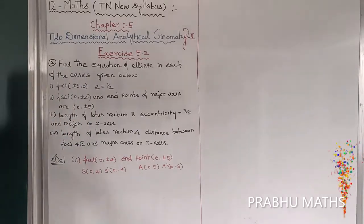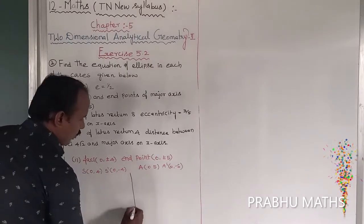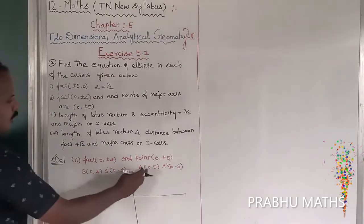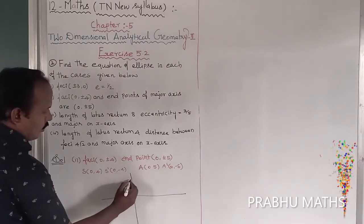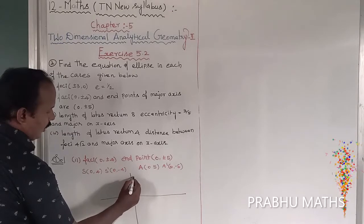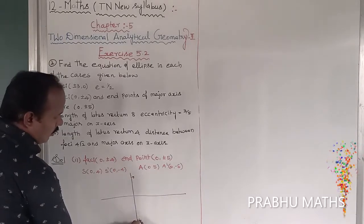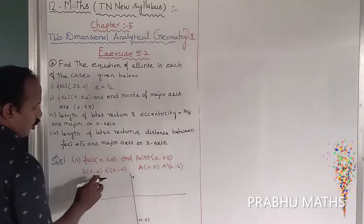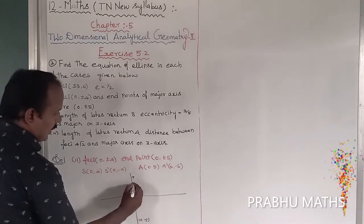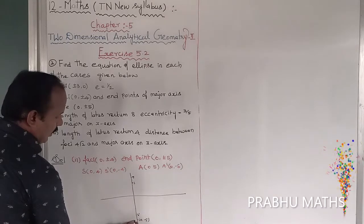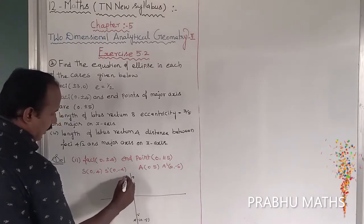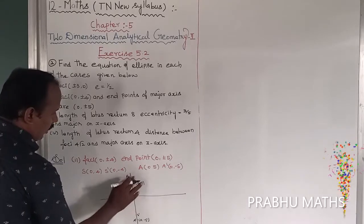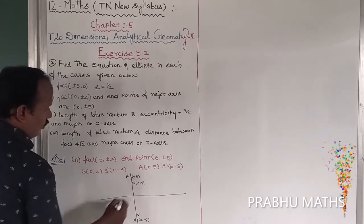First of all, to draw the diagram. So first the x, y axis. The end point (0, 5) on the y-axis — so this is (0, 5), then (0, -5). Next (0, 4) — that is S. This one is S', A', and A. So (0, 4), (0, 5).